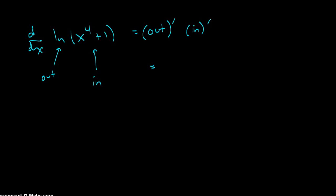The outside function is the natural logarithm, and the derivative of the natural logarithm of x is one over x. So to take the derivative of the outside, it's one over,